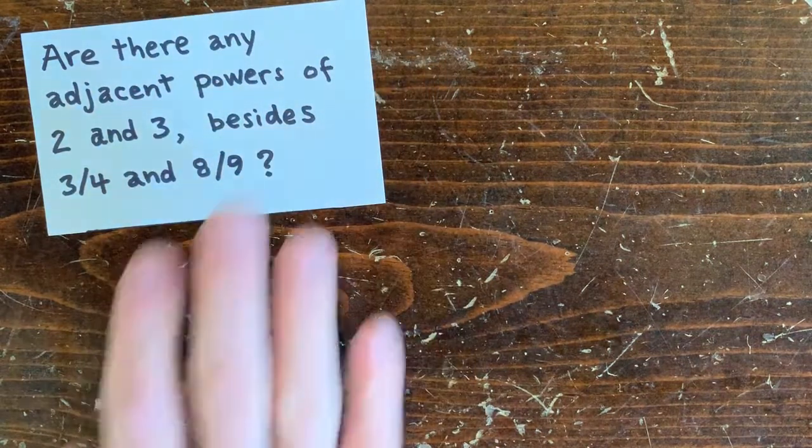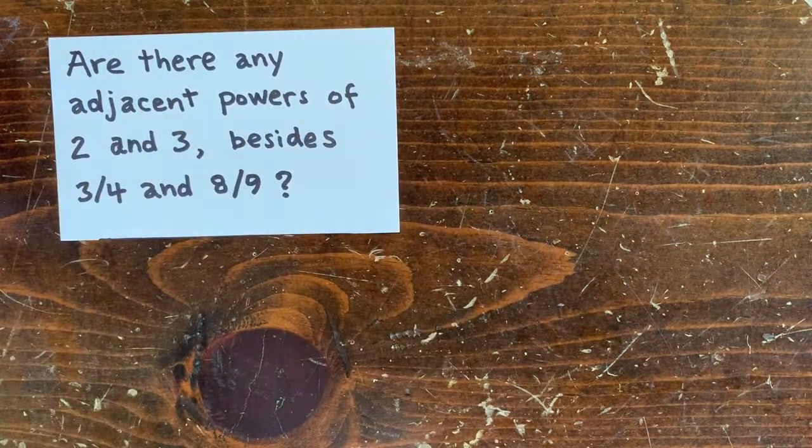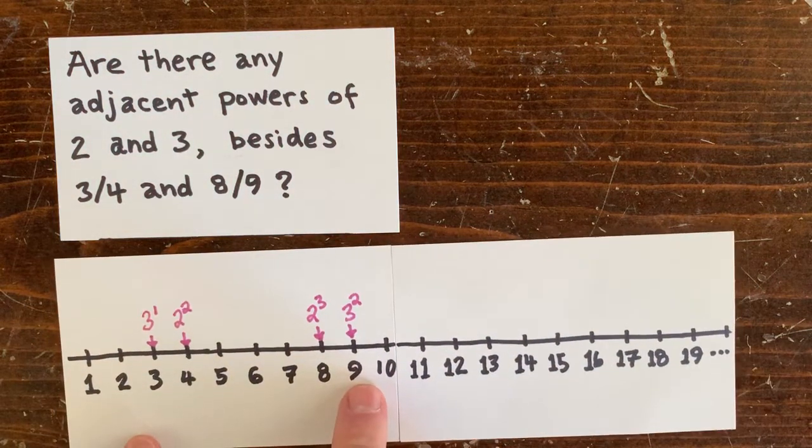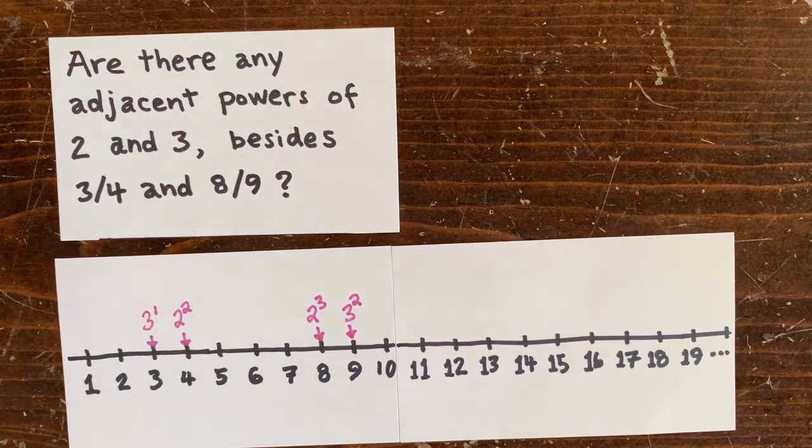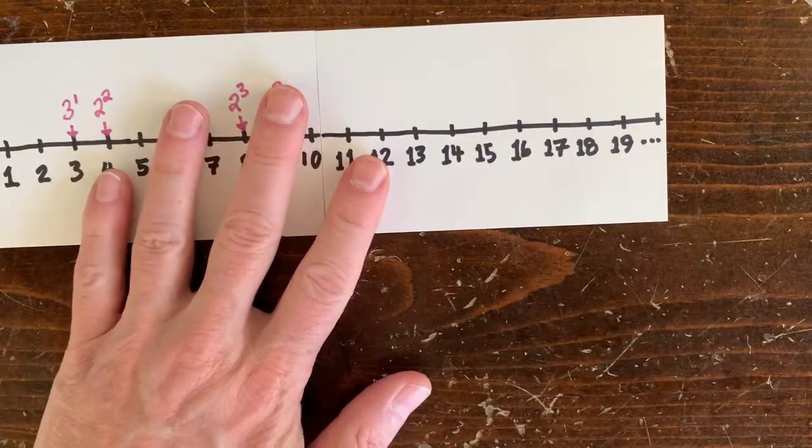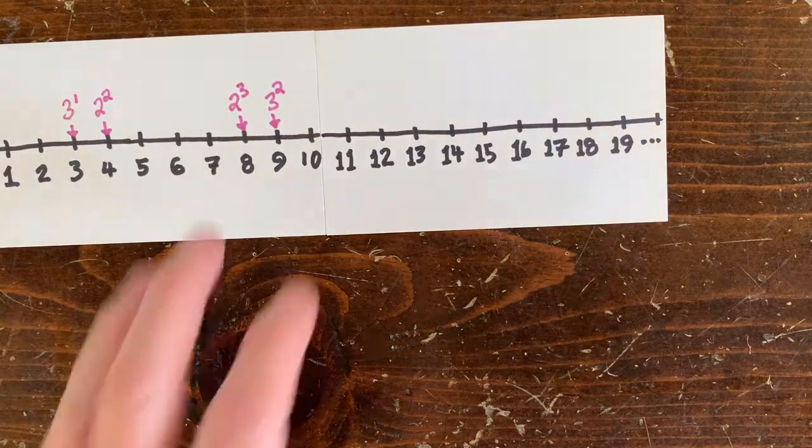Let's start by looking at some other conjectures. In an earlier episode, we looked at whether powers of 2 and 3 are ever adjacent. It happens with 3 and 4, and again with 8 and 9. So you might imagine it happens a lot down the number line. How many times would we expect it to happen under some assumption?